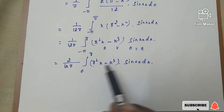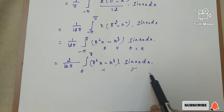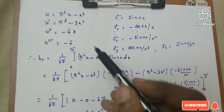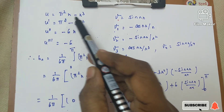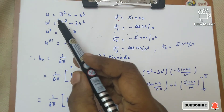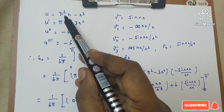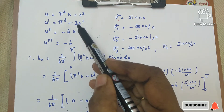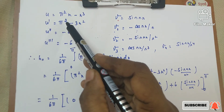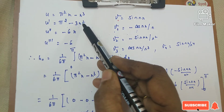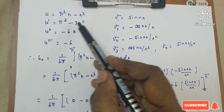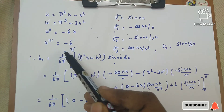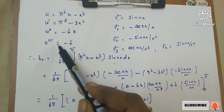Now we are going to apply Bernoulli's formula. We take u = π²x - x³ and v = sin(nx). Differentiating u: u' = π² - 3x². Differentiating again: u'' = -6x. Differentiating a third time: u''' = -6. The next derivative gives 0, so we stop at the third derivative.